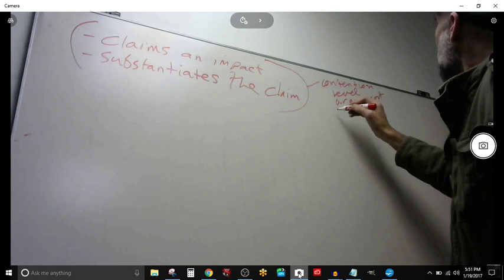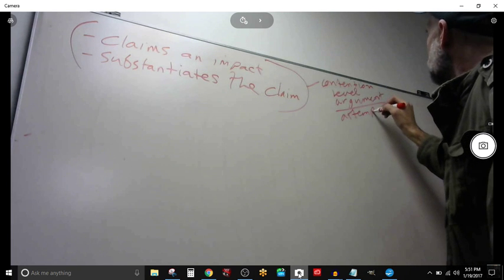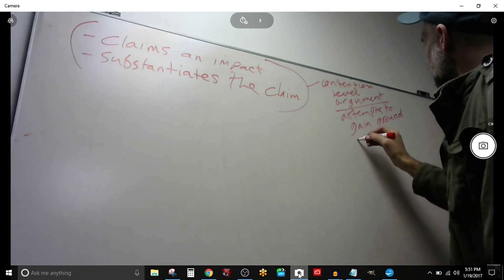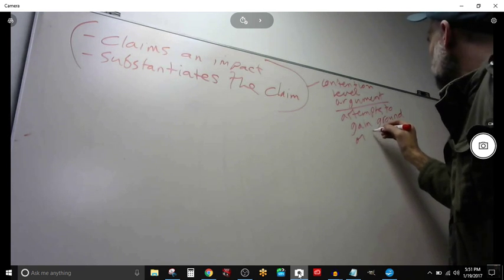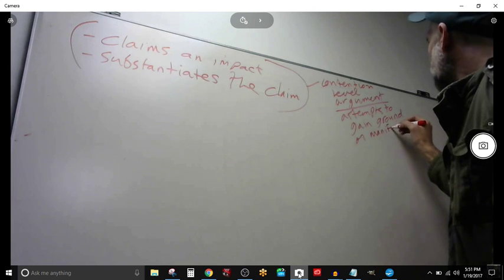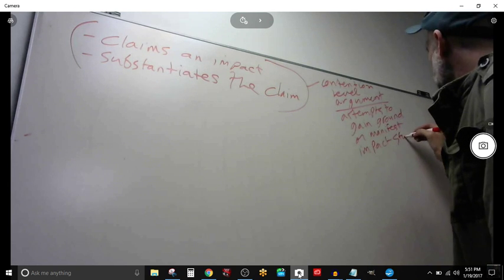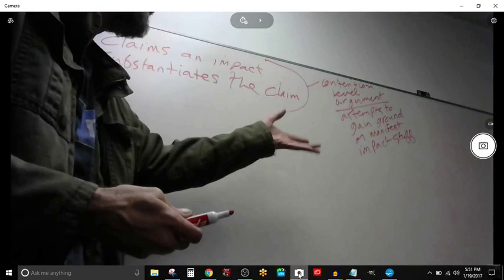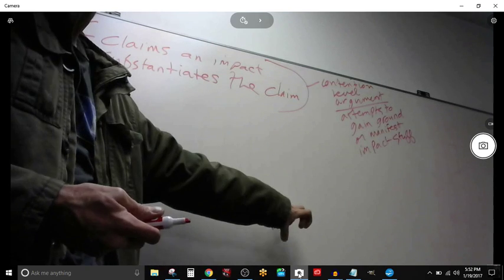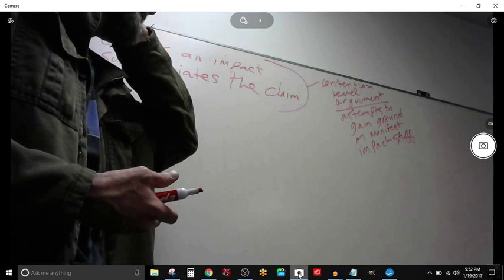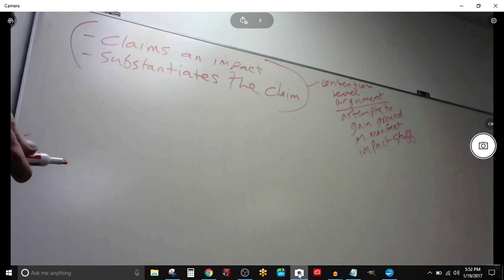What does it do? It attempts to gain ground or manifest impact stuff. Could be pro, could be more impacts or less impacts - mitigating impacts, making bigger impacts, turning impacts, whatever that kind of stuff. So a contention level argument attempts to gain ground. It says here's why you should vote for me, here's some good arguments for my side. And then the other thing it does is it attempts to pile up impacts.